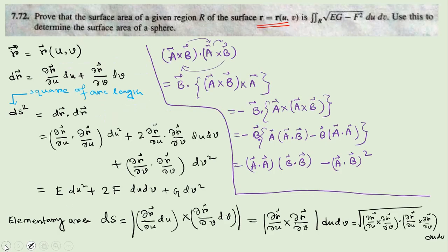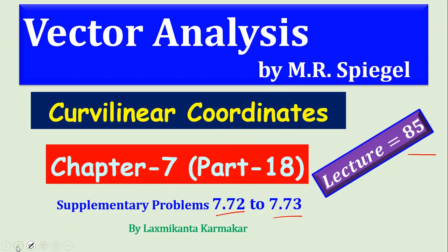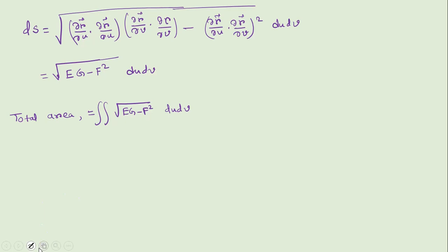The second part says: use this formula to determine the surface area of a sphere of radius a. For a sphere, R vector is written in two variables since a is constant; only θ and φ are variables.